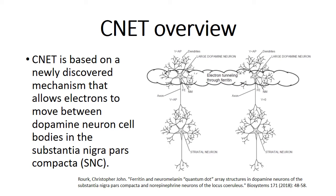SNC tissue also contains dopamine neurons, which are catecholominergic neurons. Those dopamine neurons provide signals to the striatum, which generates signals that eventually cause motor neurons associated with a specific action to fire, such as to cause an arm to move.